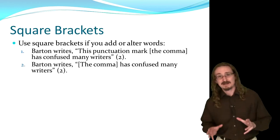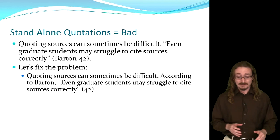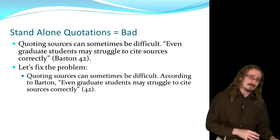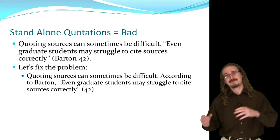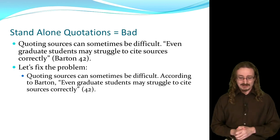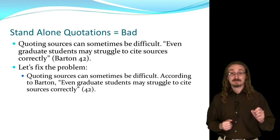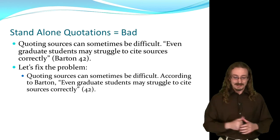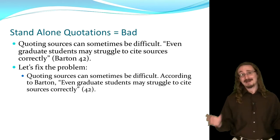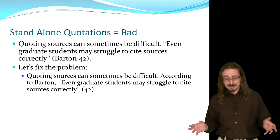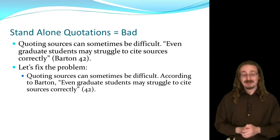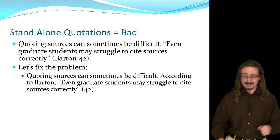The biggest mistake students make when quoting something directly is to just have a standalone quotation. This is wrong. You always have to put something before or after the quotation in the same sentence — you can't just have a sentence that's nothing but a quotation. A good example: 'Quoting sources can sometimes be difficult. "Even graduate students may struggle to cite sources correctly."' That last part is wrong. You can fix it by putting 'According to Barton,' or 'According to one scholar,' before it — anything like that is fine, but just don't have it standing all by itself.